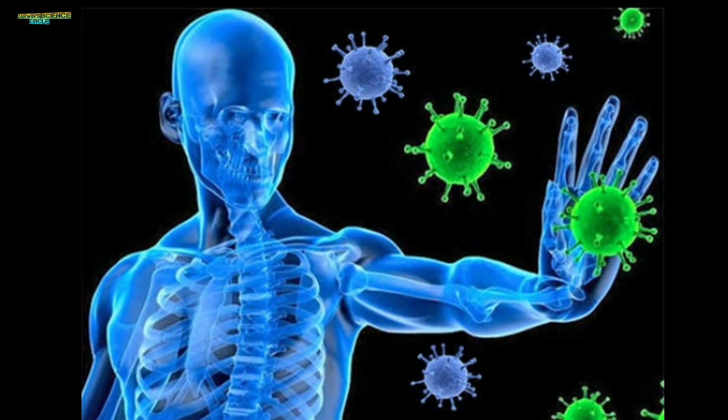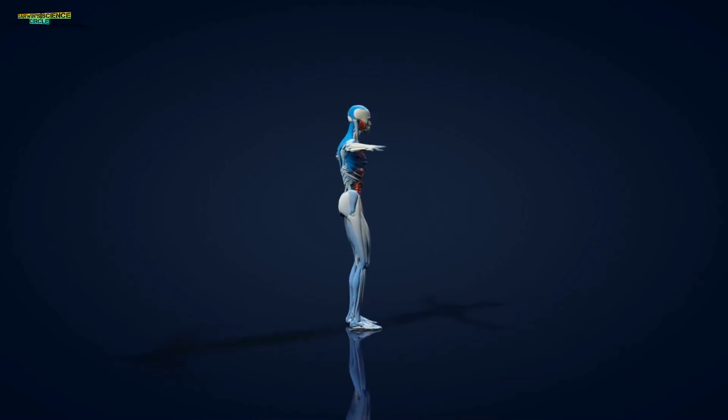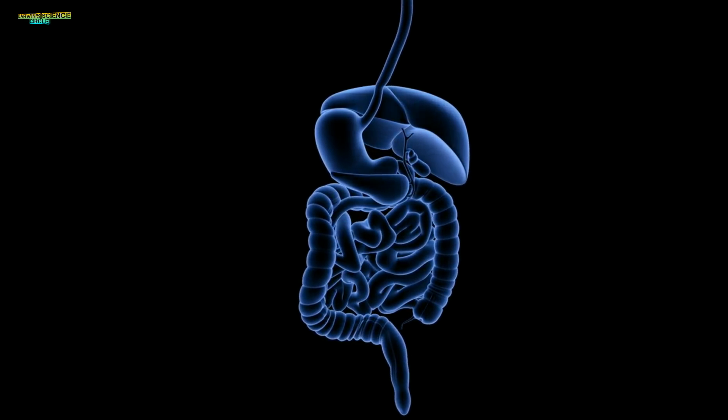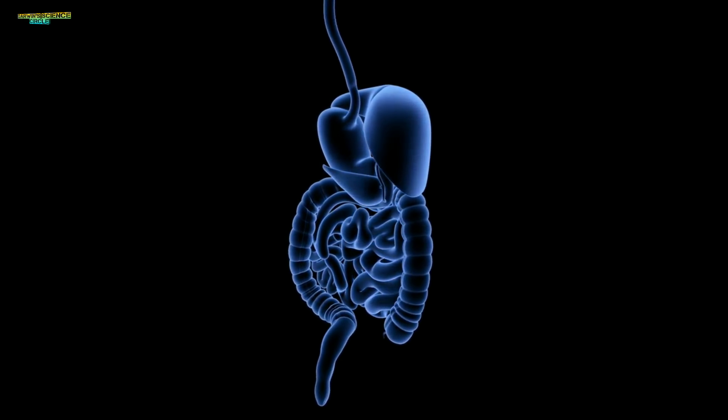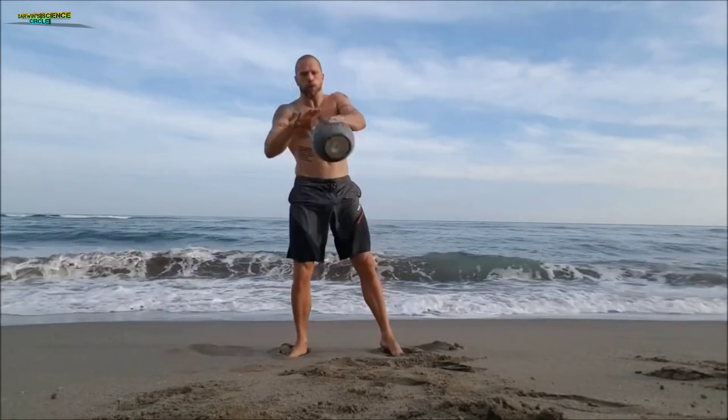Bacteria can make immune system work. They help with digestion. They are present in our body cells. They work with muscle cells in our bodies.